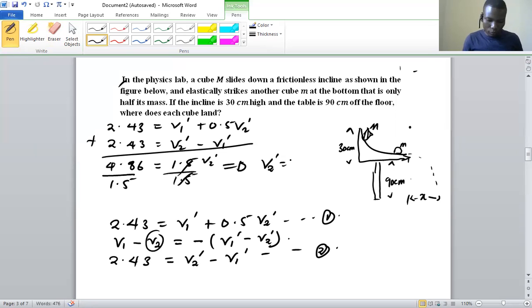So we divide throughout by 1.5, of which we are going to have now v2 prime is going to be 3.24 meters per second. So that is our v2 prime, so that's the final speed. So now after finding that, we can put that v2 prime in any of the equations, equation one or equation two, and we can get our v1 prime.